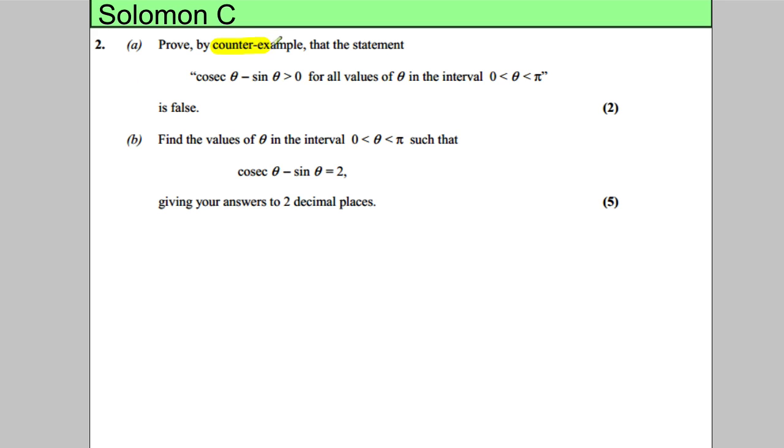In this question we're asked to prove by counter-example that the statement cosec θ - sin θ is bigger than zero for all values of θ between zero and π. We're asked to show this is actually false.